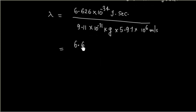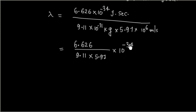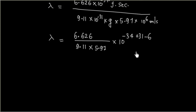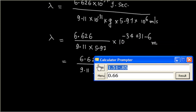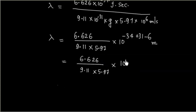So if I do the calculation, I will have 6.626 divided by (9.11 × 5.97), and for the powers of 10: −34 + 31 − 6 = −9. Since everything is in SI units, λ will come in SI units, i.e., meter. So this is 10⁻⁹ meter.